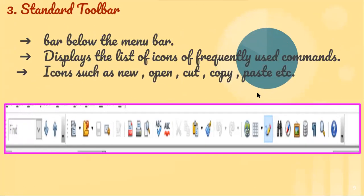Then comes the standard toolbar, which is below the menu bar. The standard toolbar plays a very important role — there are some operations which you repeat frequently, and for those operations you use some commands frequently. Those commands are displayed on this toolbar as icons. For example: the New icon, the Open icon in orange color, Save, Spell Check, Undo, Redo, and the Table icon. All frequently used commands are contained in the standard toolbar.